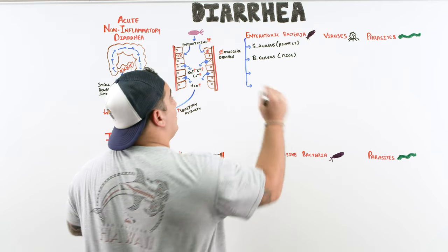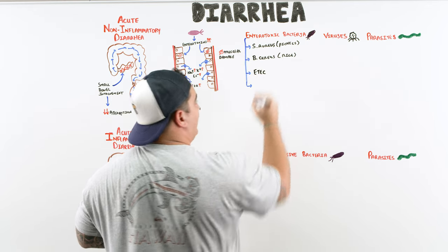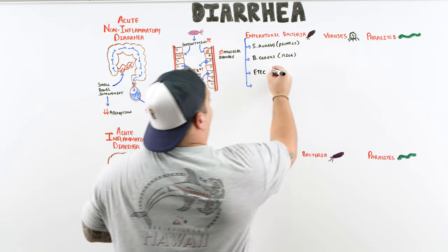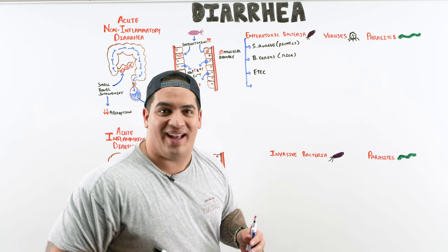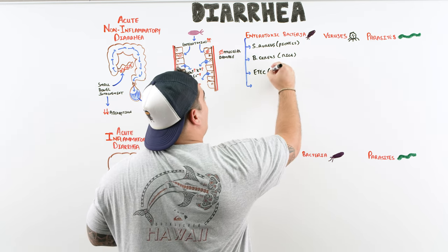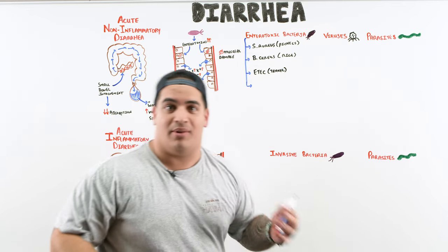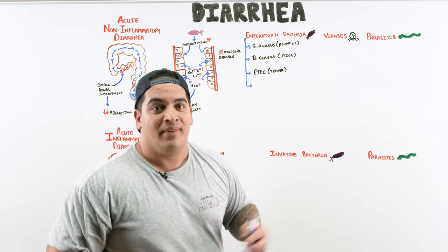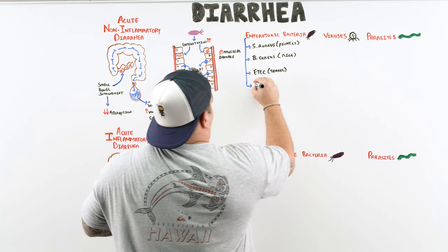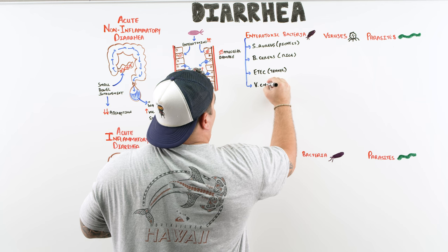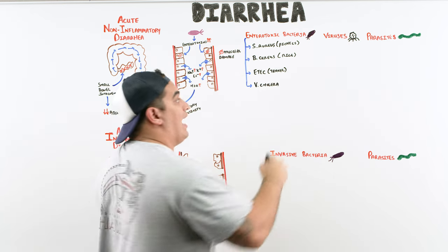Another really high-yield one is enterotoxigenic E. coli — this is traveler's diarrhea, Montezuma's revenge. People who travel to places like Mexico, drink the water or eat the food, and end up with terrible diarrhea. Also worth noting is Vibrio cholerae, which is associated with travel and endemic in third-world countries.